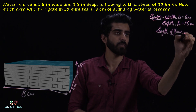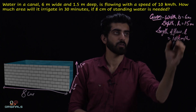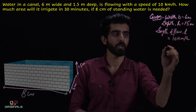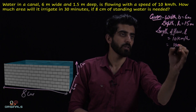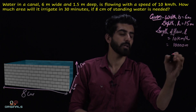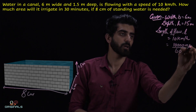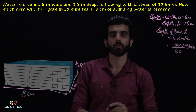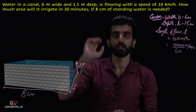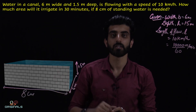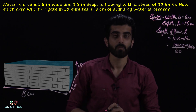So L is equal to 10 km per hour. Our dimension is in meters, so we change it: 10,000 meters divided by 60 gives us meters per minute. We convert it to minutes because we are asked how much area will be irrigated in 30 minutes.